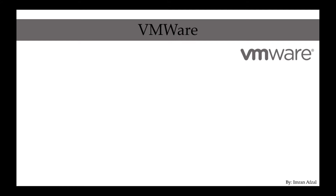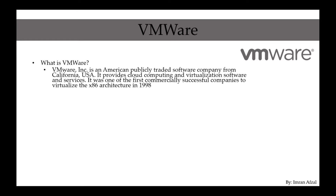This entire course is about VMware, so let's take a few minutes to understand what VMware is. VMware Incorporation is an American publicly traded software company from California, USA. It provides cloud computing and virtualization software and services. In this course, we are covering the virtualization software. VMware was one of the first commercially successful companies to virtualize the x86 architecture, back in 1998.